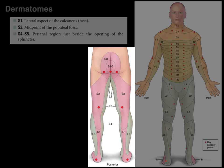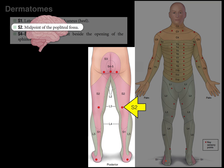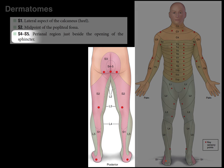Moving to the posterior view: the S1 dermatome is tested by the lateral aspect of the calcaneus, or the heel. The S2 dermatome is tested by touching the skin on the back of the popliteal fossa, the back of the knee — I remember this because 'fossa' has two S's in it, for S2. Finally, the S4 and S5 dermatomes correspond to the perianal region around the opening of the external anal sphincter.